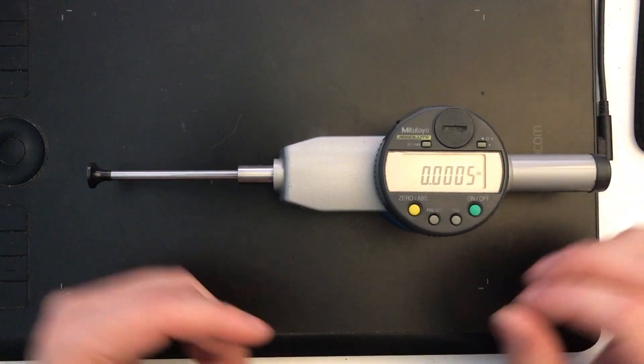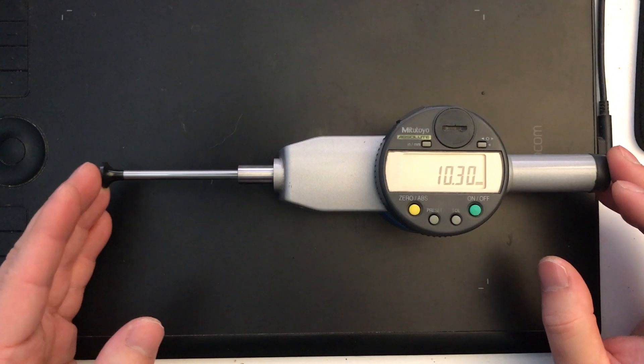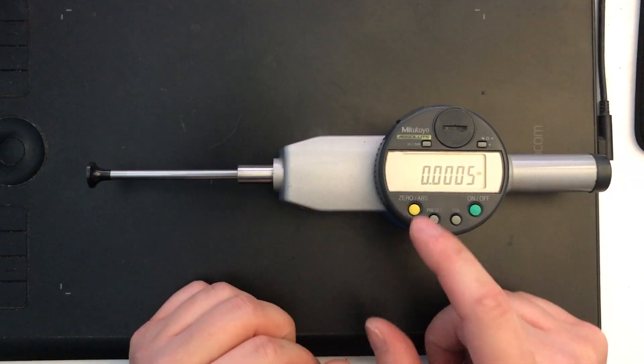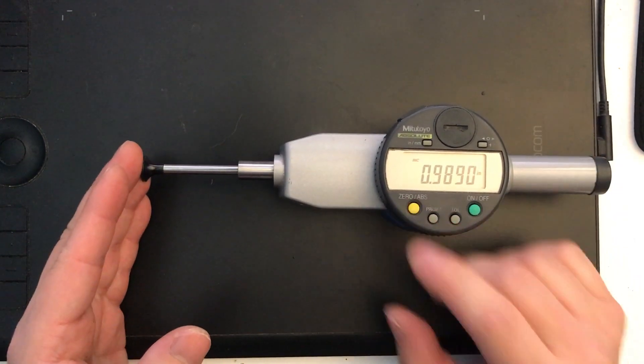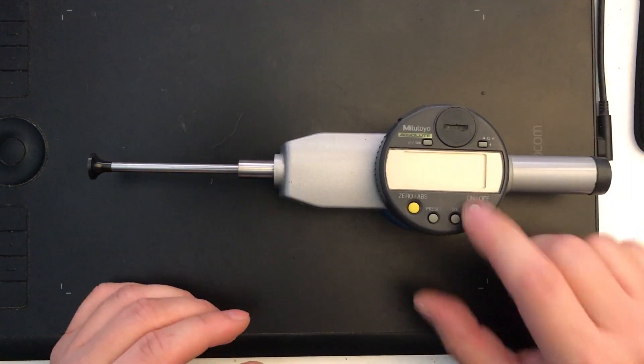And at this point, you can then go ahead and if you wanted to, you know, change your settings from inches to millimeters and use any of the other features that you might want to use. Zero it anywhere you wanted, reverse it, and it all is in memory here.